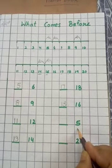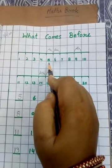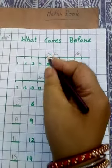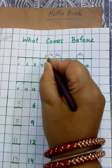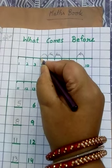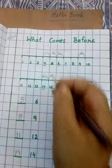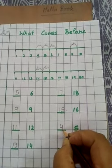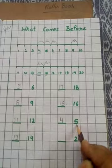Next is number 5. 5 is here. Again, look at the number line. And when we go in the backward direction, next number is 4. So 4 comes before 5.